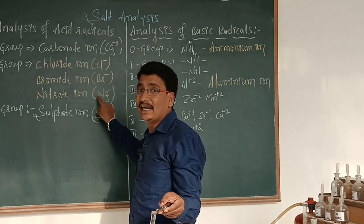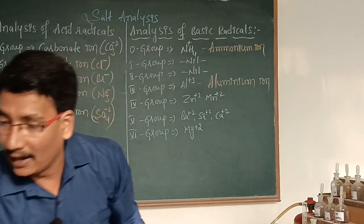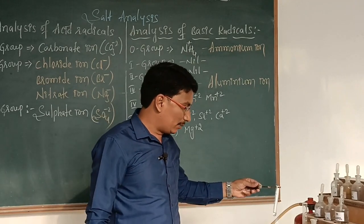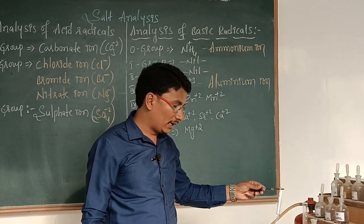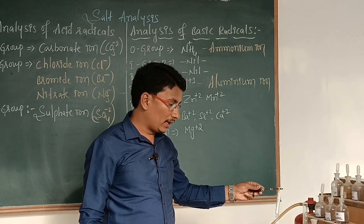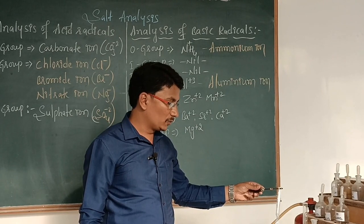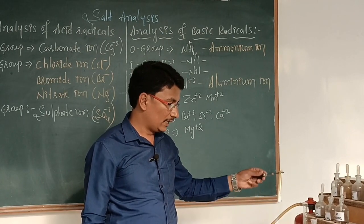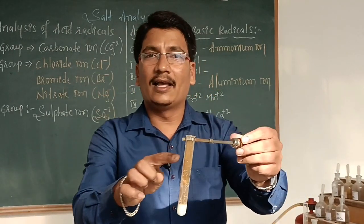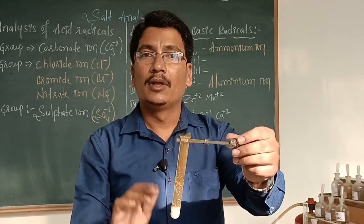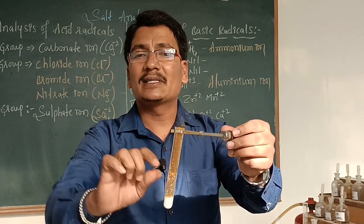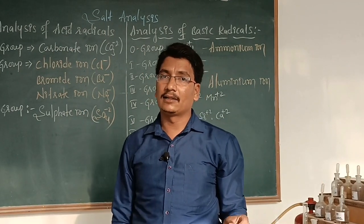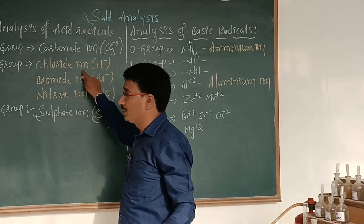If no reaction is observed, then we have to add a piece of copper foil and concentrated H₂SO₄. If reddish-brown fumes are evolved after adding copper foil, it indicates nitrate ion is present. So: white fumes — chloride present; white fumes followed by reddish-brown — bromide present; reddish-brown fumes with copper foil — nitrate ion present.